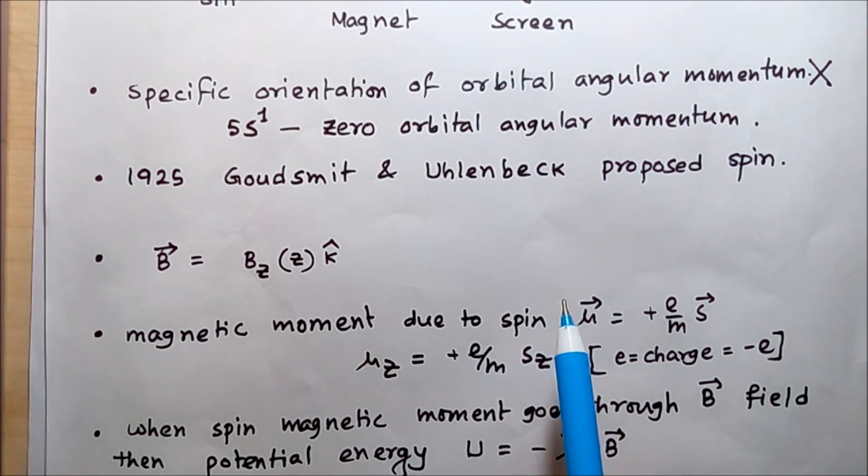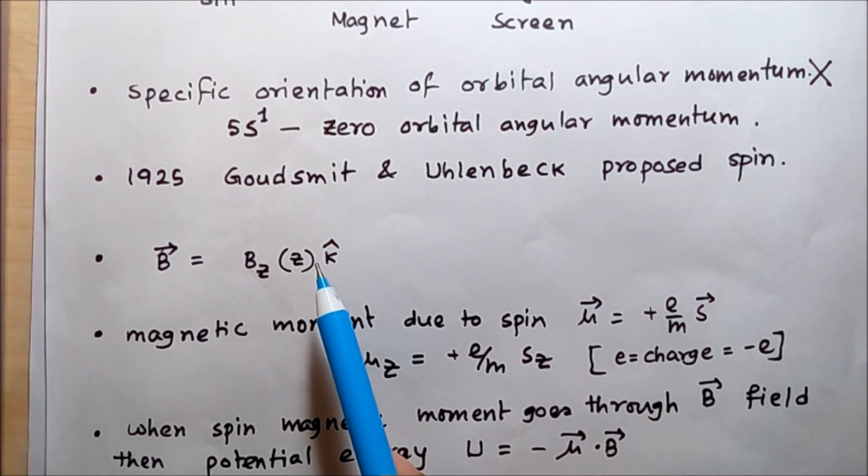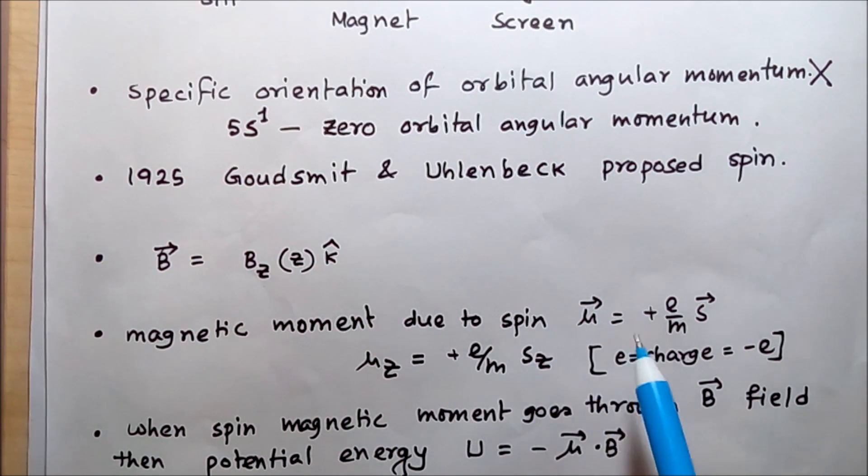This magnetic field will interact with the magnetic field generated due to the spin of the electron. The magnetic moment is given by μ = (e/m)S, where e is the electronic charge, m is the mass of the electron, and S is the spin angular momentum.